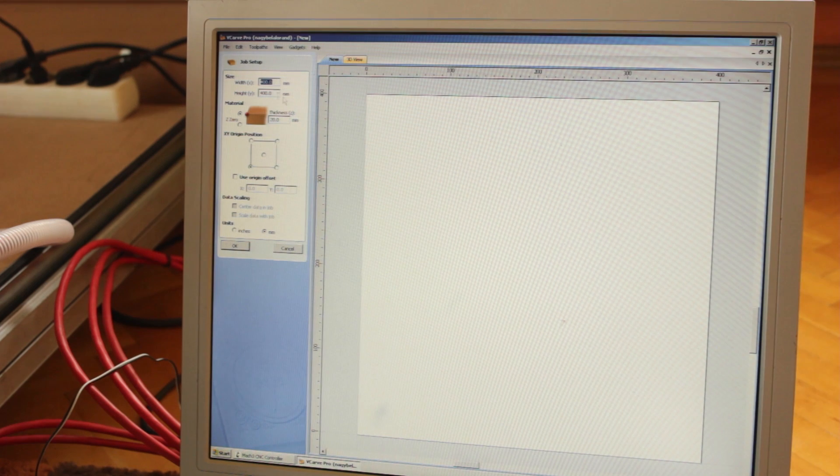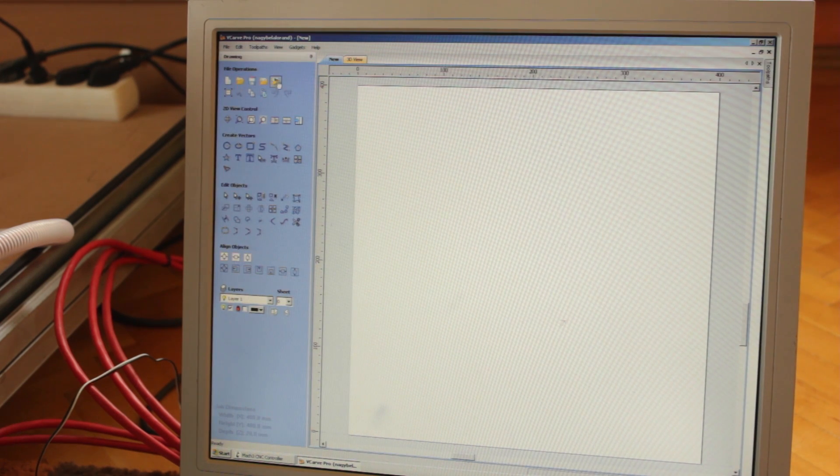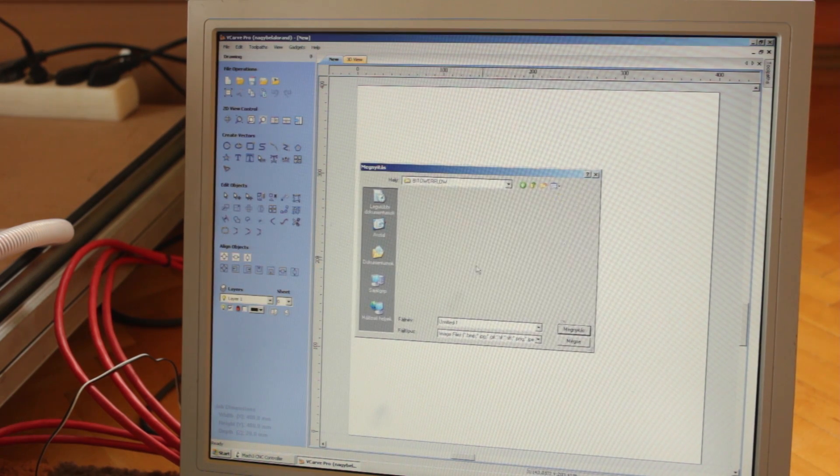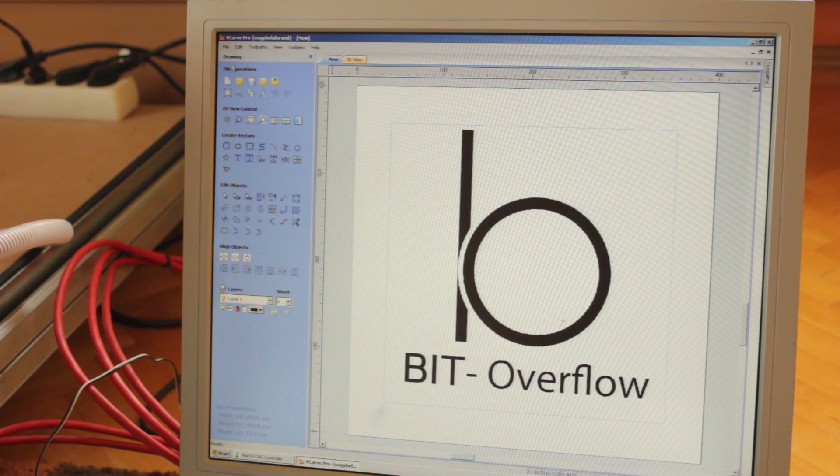When using a CNC machine you need a software in which you can design what you want to make, like AutoCAD for example. In this case I am using VCarve Pro to vectorize an image and calculate the machine's toolpath.